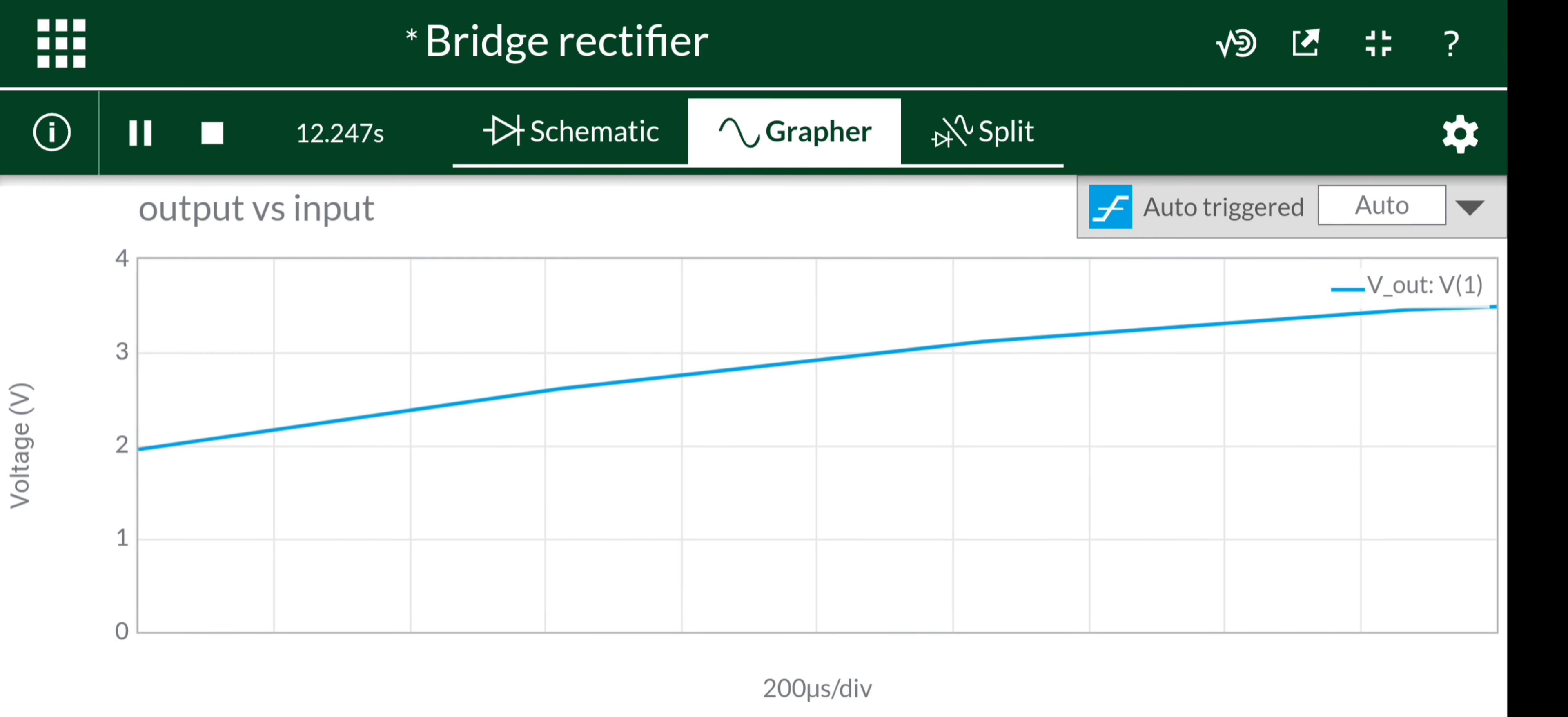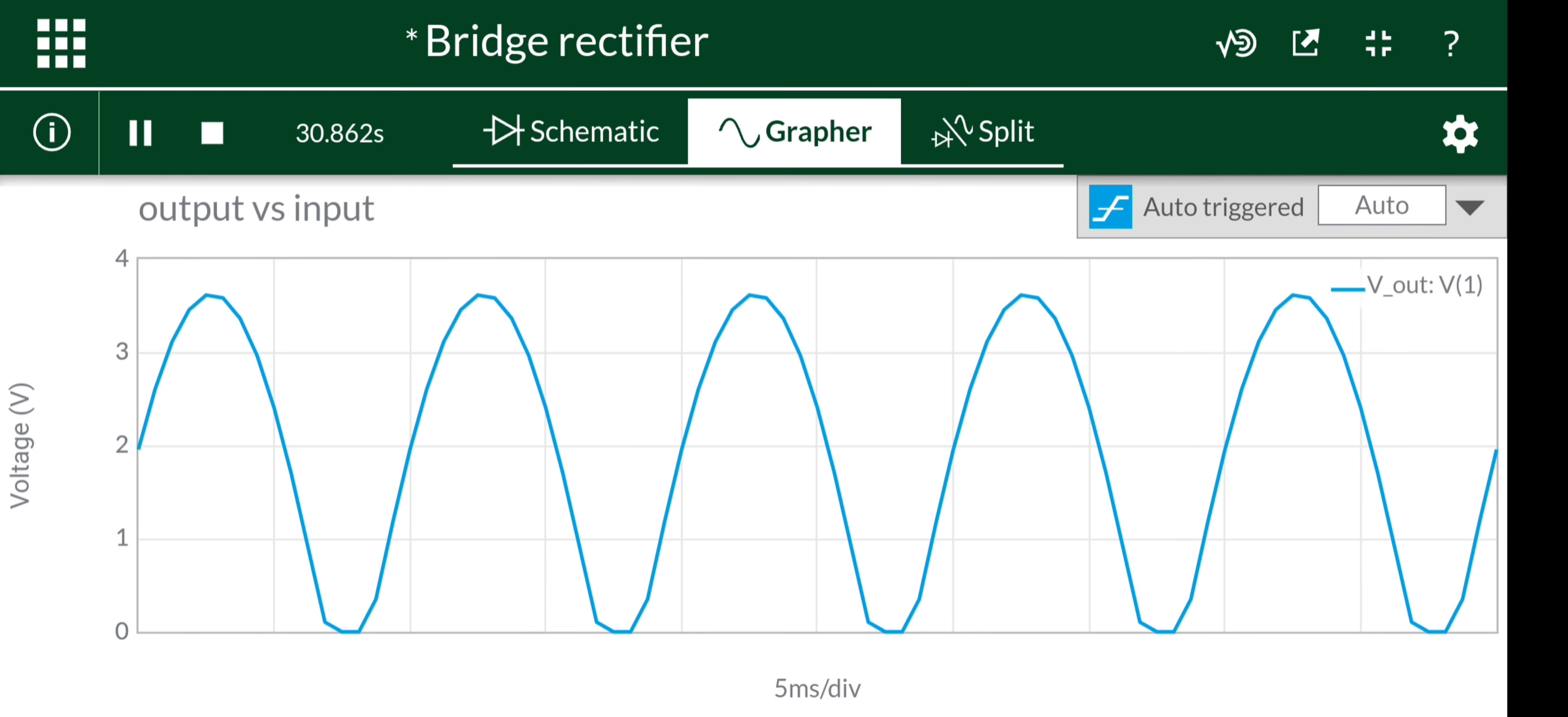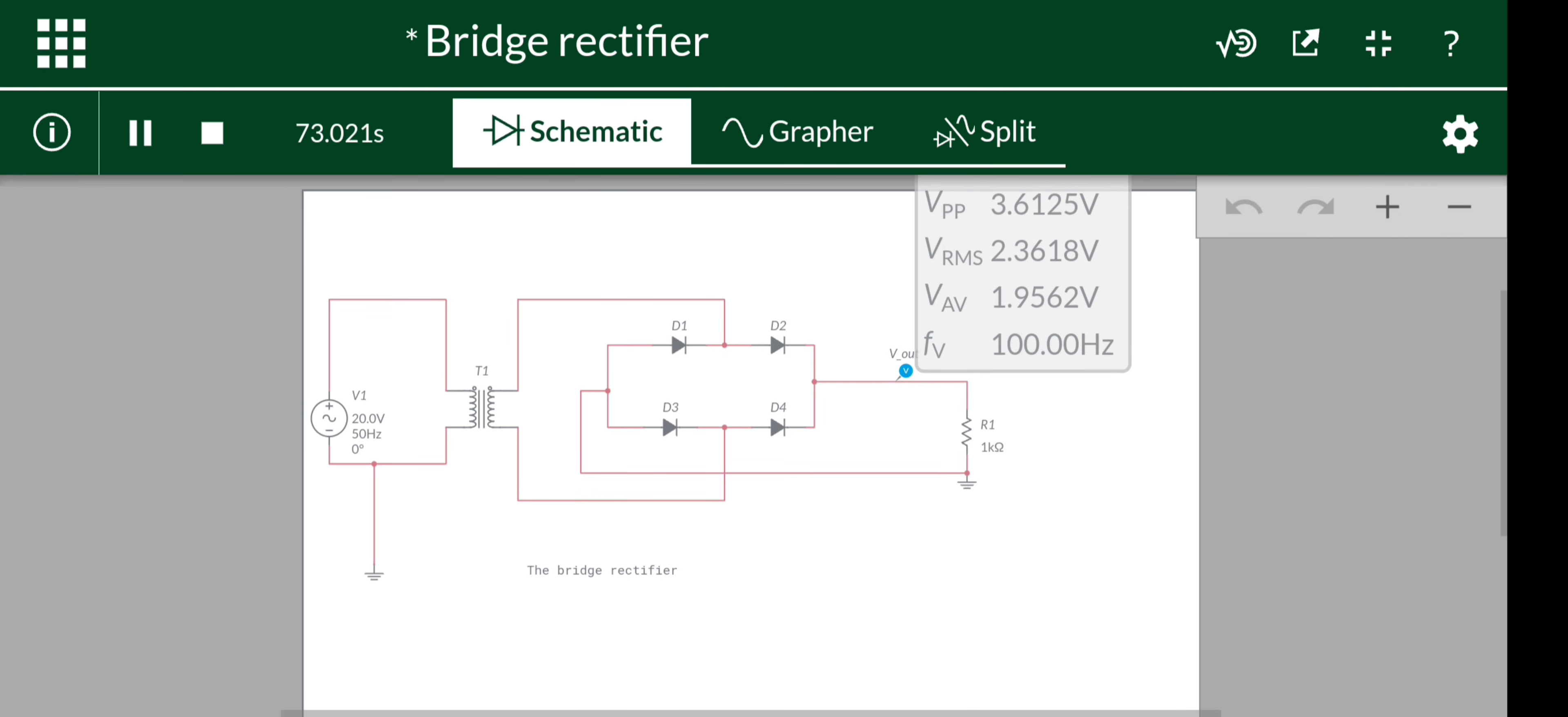This is the output waveform - the pulsating DC - and its peak is 3.6 volts.